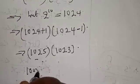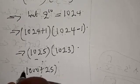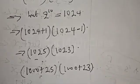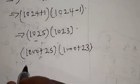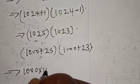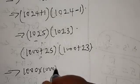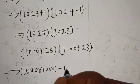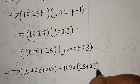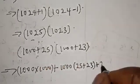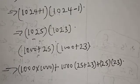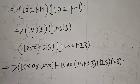This can be expressed as 1000 plus 25, multiplied by 1000 plus 23. Expanding the bracket: 1000 times 1000, plus 1000 times 25, plus 1000 times 23, plus 25 multiplied by 23. 1000 times 1000 gives one million.